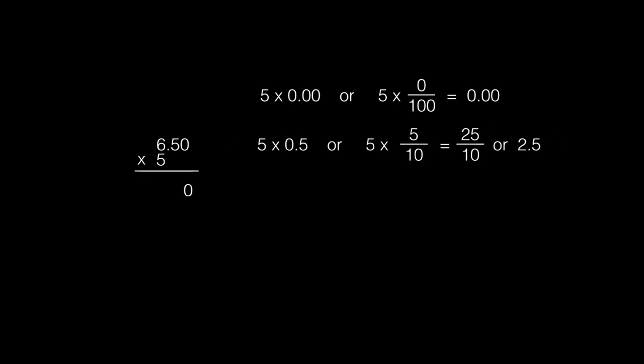Next, we will multiply the whole number 5 by the tenths in 6.50 to get 2.5 or 25 tenths. Then, we will bring down the 2 in the ones place and put the 5 in the tenths place.